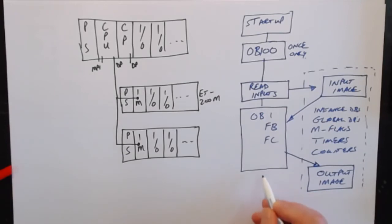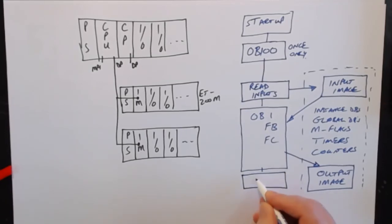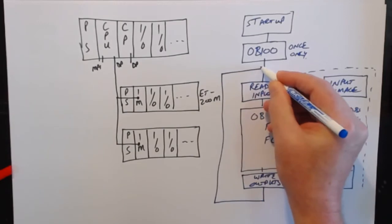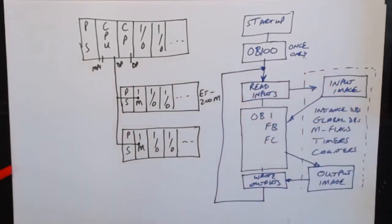And at the end of the cycle, when OB1 is complete, it then goes and does a write to the outputs, the physical hardware. It takes that output image, puts it on the hardware. Once it's done that, it then returns back to continue and repeat the cycle over and over again.